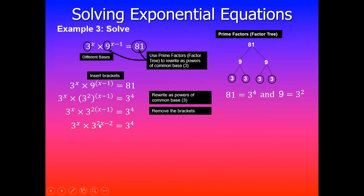So 3^x × 3^(2x-2) = 3^4, where 2 times x is 2x and 2 times negative 1 is negative 2.